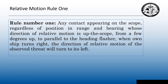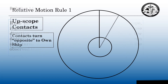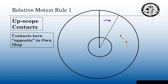Relative motion rule 1. Any contact appearing on the scope, regardless of position and range and bearing, whose direction of relative motion is up the scope — from a few degrees up to parallel to the heading flasher — when own ship turns right, the direction of relative motion of the observed threat will turn left. Up-scope targets: contact turns opposite of own ship. So our own ship is going to turn from due north to starboard. I have an up-scope target here, and when I make that course change to starboard, it's going to turn in the opposite direction — in this case, it will be turning to port.